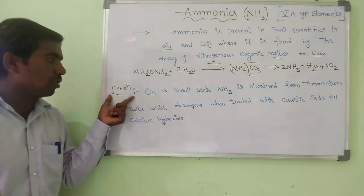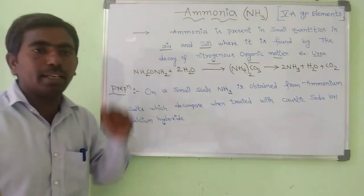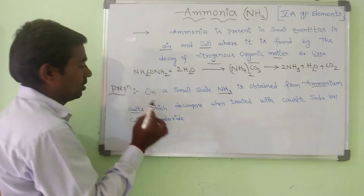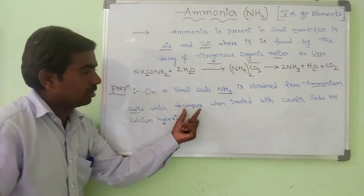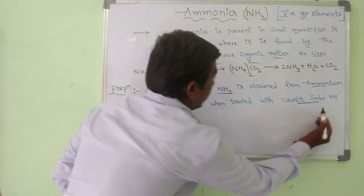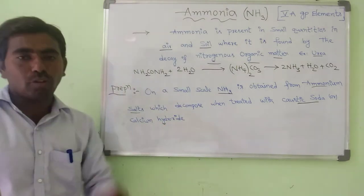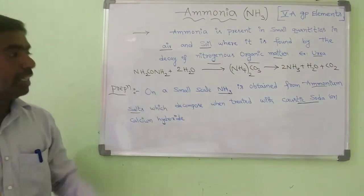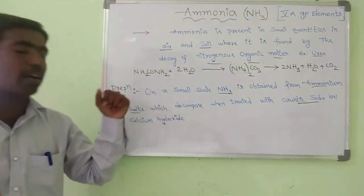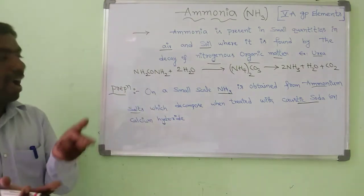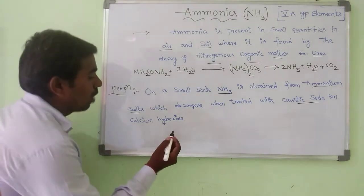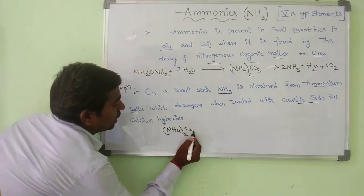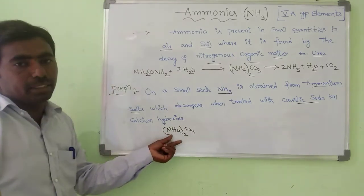Next, the preparation of ammonia. On a small scale, ammonia is obtained from ammonium salts, which decompose when treated with caustic soda or calcium hydroxide. In this method, ammonium salts are treated with caustic soda or calcium hydroxide. I am taking the ammonium salt — I am taking ammonium sulphate. It is one of the ammonium salts.